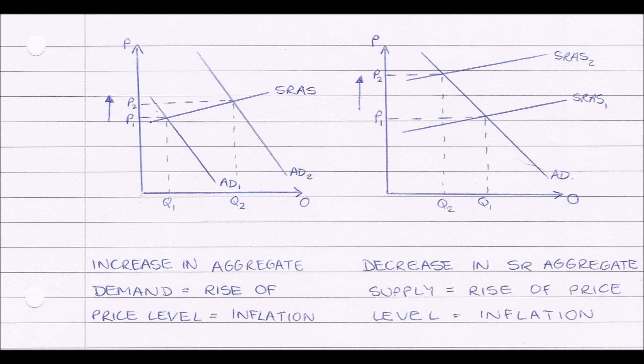So if there is an increase in aggregate demand, our curve shifts right from AD1 to AD2, and because of this our equilibrium price increases from P1 to P2. So as there has been an increase in price, inflation has occurred because inflation is a sustained rise in price.